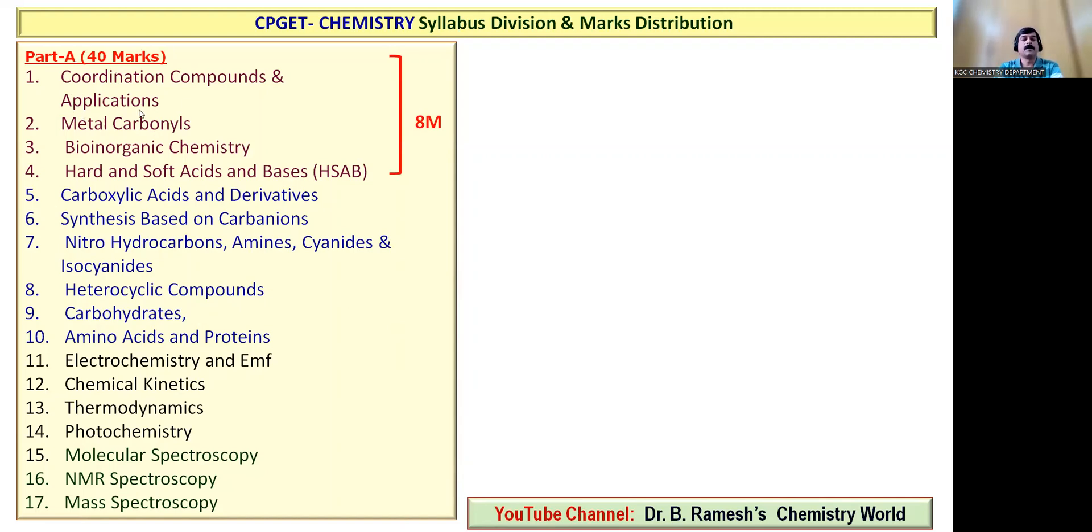The inorganic part of the part A consists of 8 marks, then organic part will carry 12 marks, physical chemistry part will carry 13 marks, and spectroscopy will carry 7 marks.